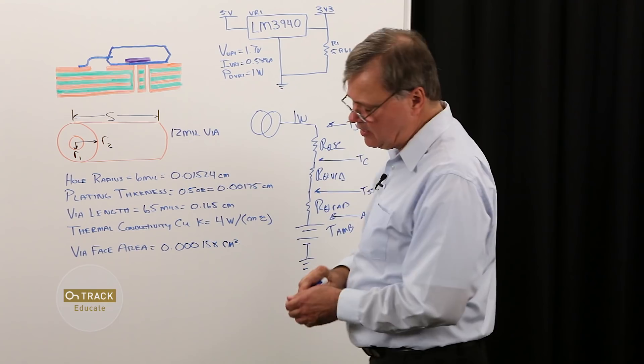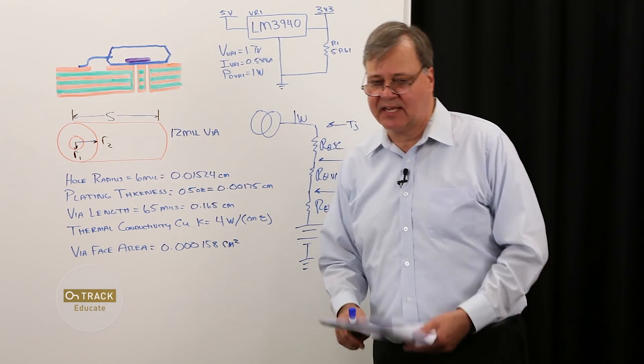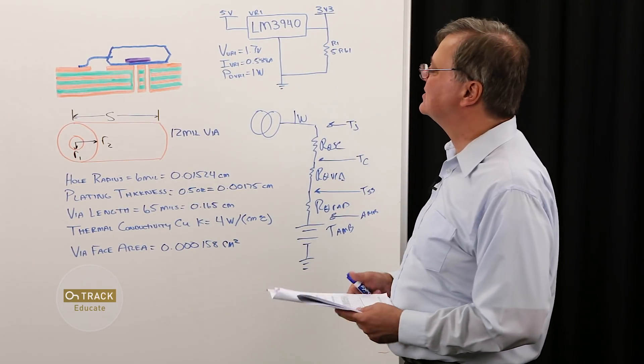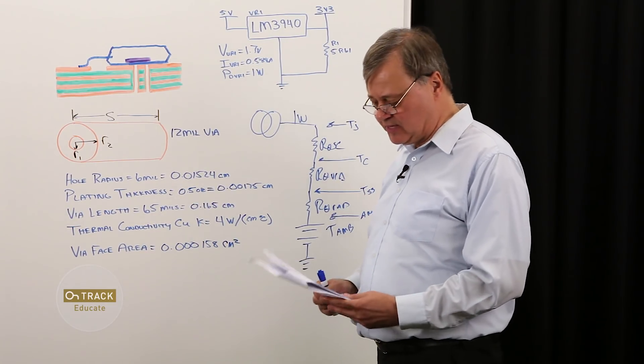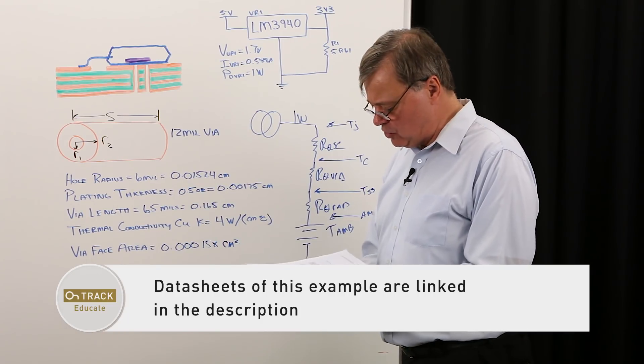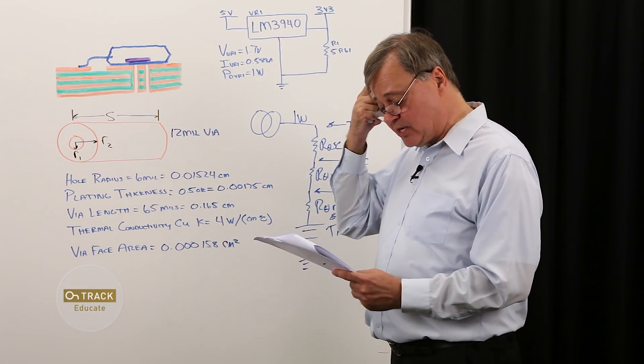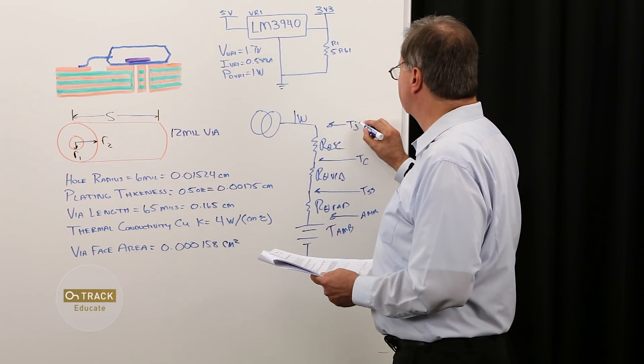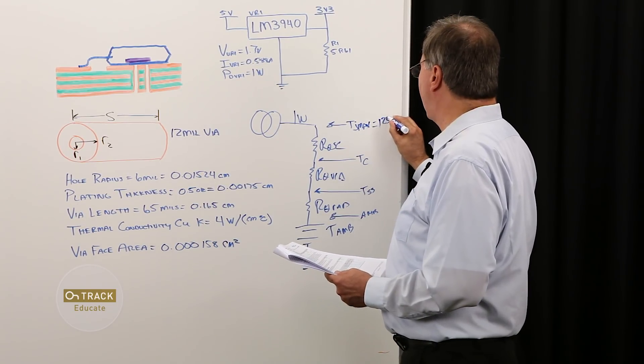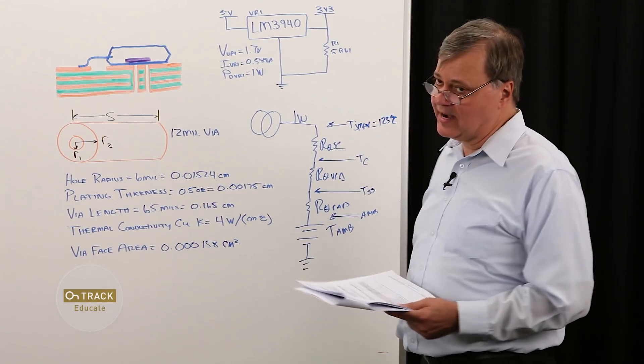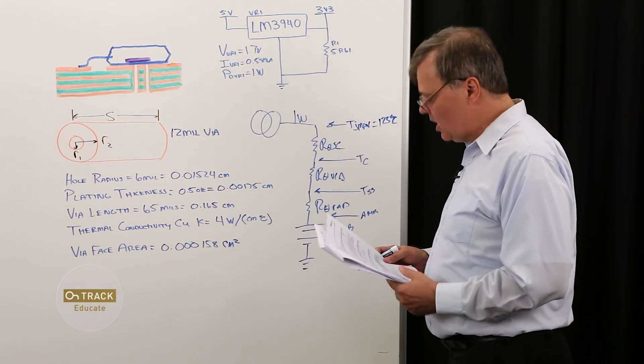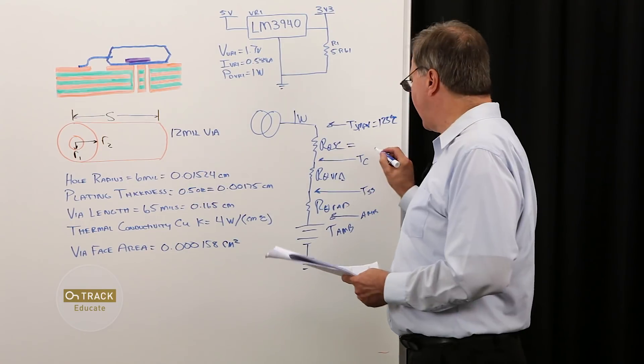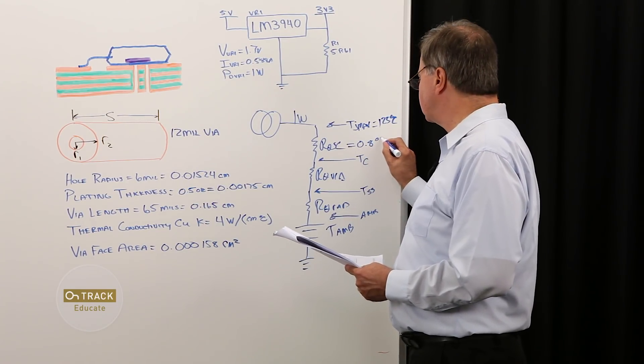Just as we saw in the previous episode, the manufacturers of components and heat sinks make this very easy on us. They actually provide us numbers for the thermal resistances of their components. Here I've got the data sheet for my LM3940. A couple of useful numbers here. Under recommended operating conditions, my maximum junction temperature is specified as 125 degrees C. So TJ max equals 125 degrees C. That's the maximum operating temperature that we can never exceed. Then we have the thermal resistance from junction to case, which is published as 0.8 degrees C per watt.